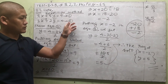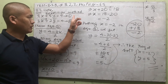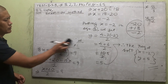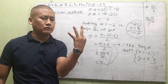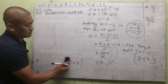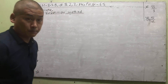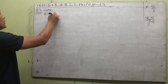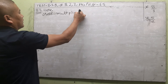Whatever method we use for the same question, we must get the same answer. By any algebraic method — substitution, elimination, or cross multiplication — the answer must be the same for the same pair of linear equations. The three algebraic methods for a pair of linear equations are: substitution method, elimination method, and cross multiplication method. There is also a graphical method. We are now solving by cross multiplication.